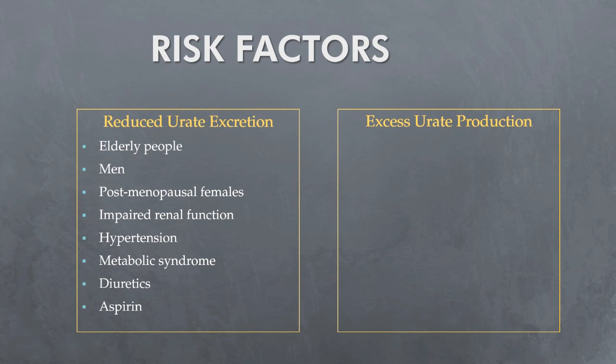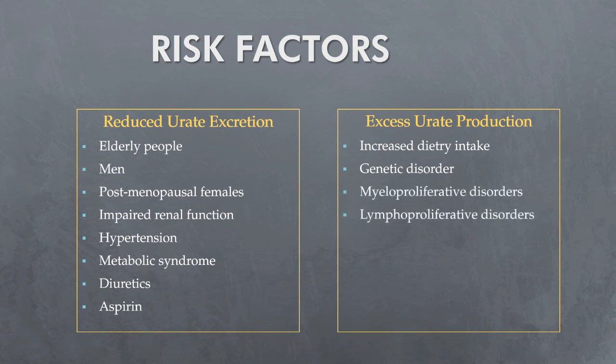Excessive urate production can occur with increased dietary intake such as alcohol — especially beer — sweeteners, red meat, and seafood. Excess urate production can also occur in some genetic disorders or myelo- and lymphoproliferative disorders, psoriasis, and tumor lysis syndrome.